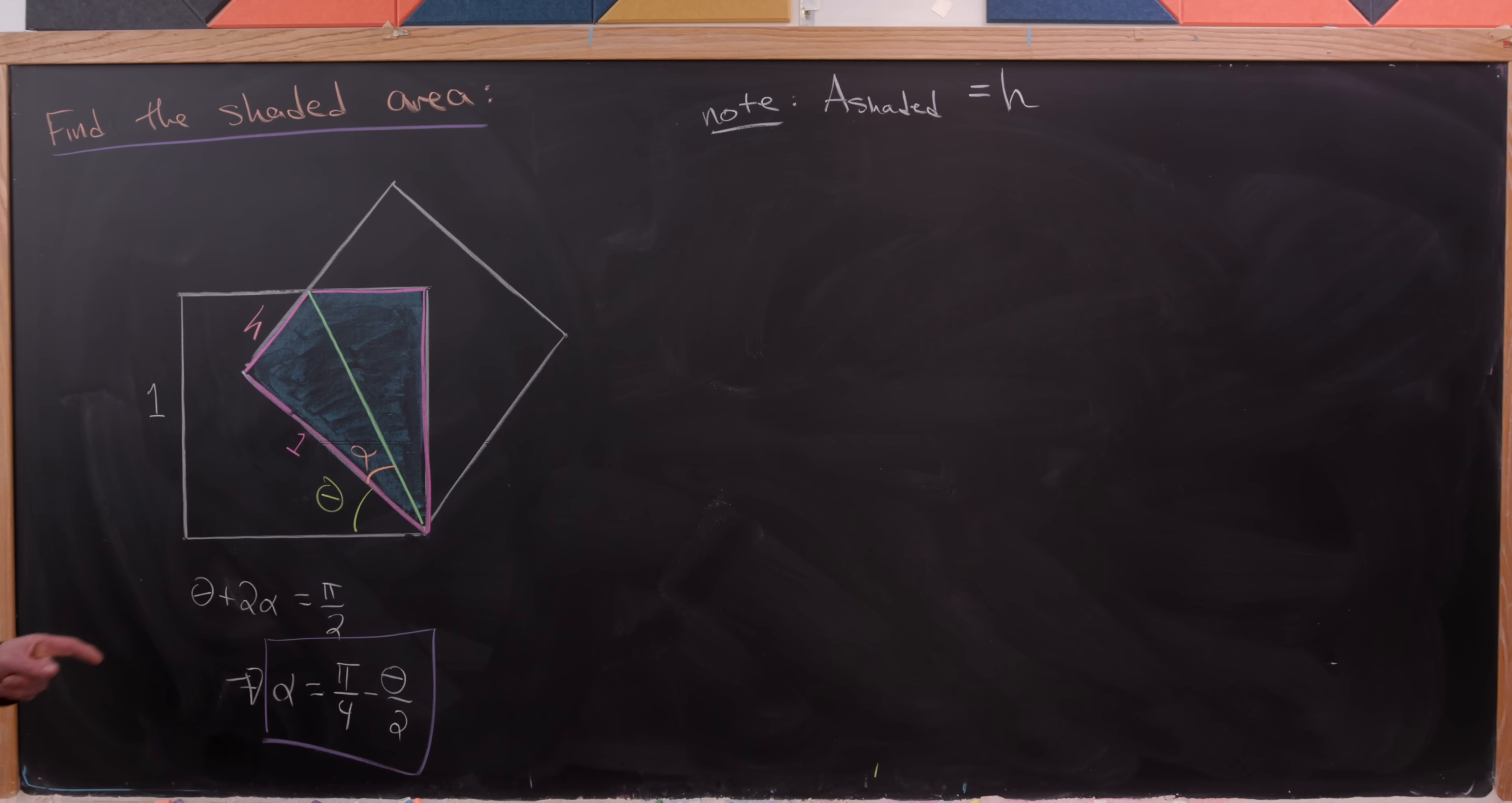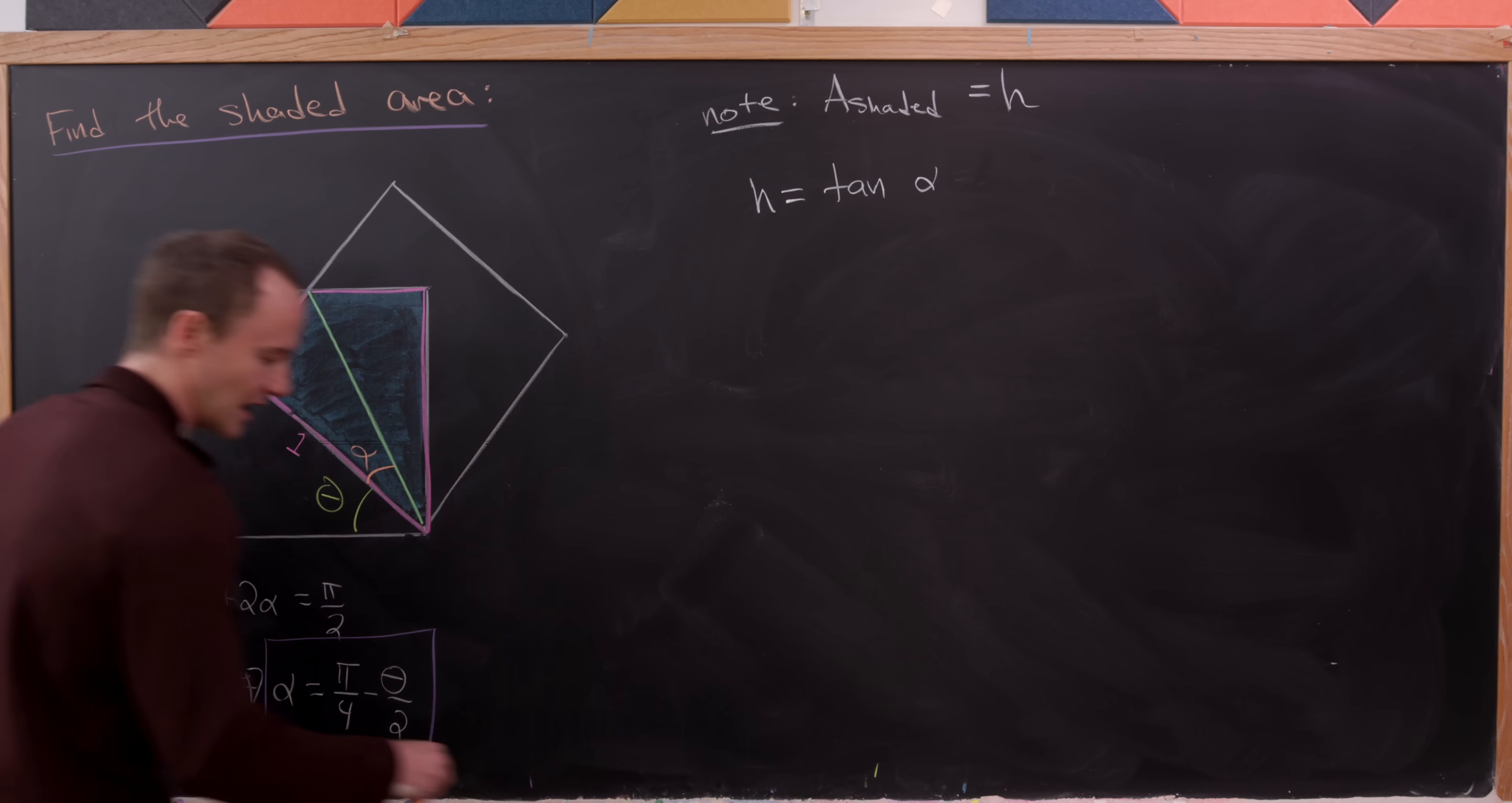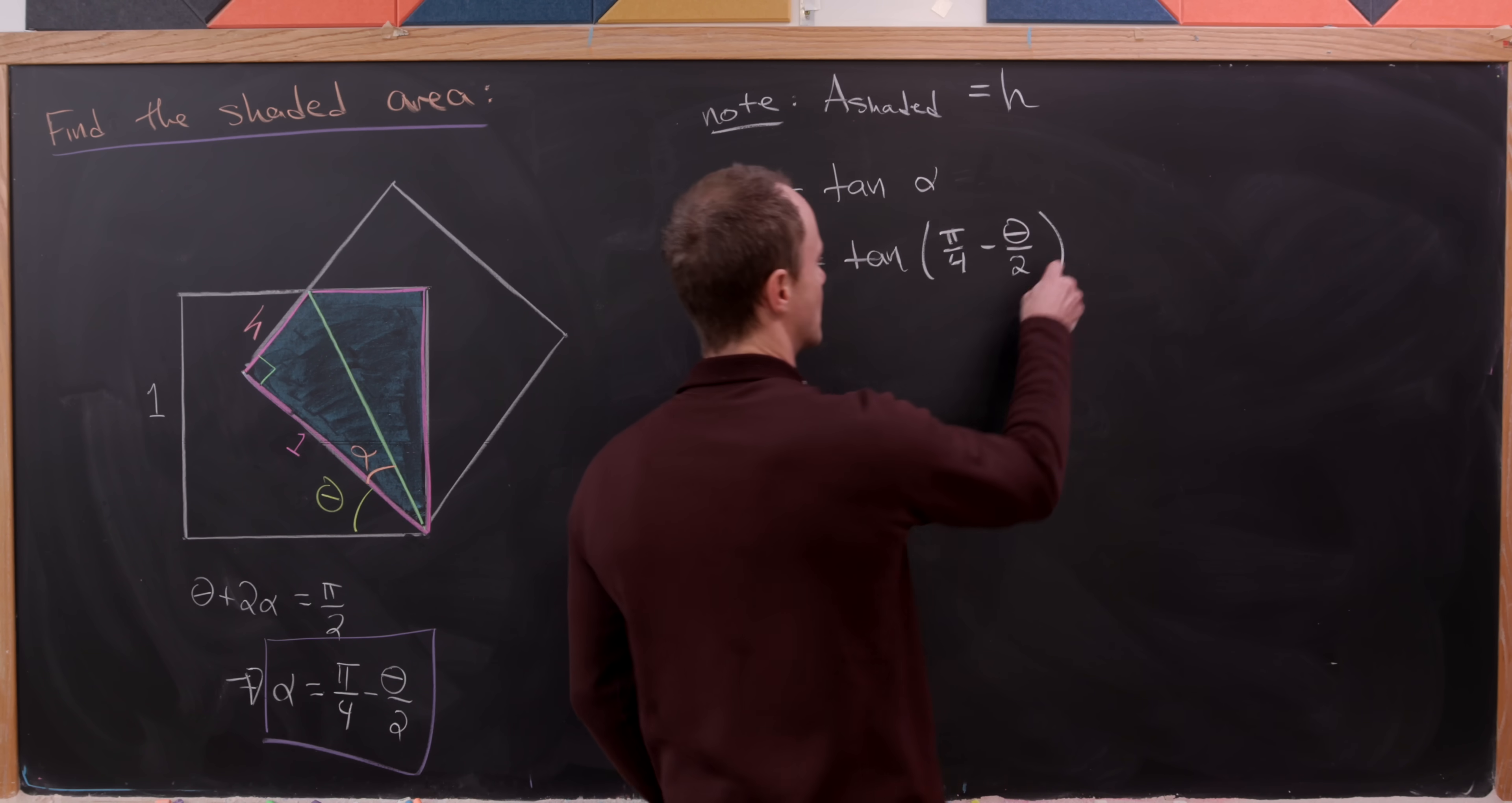But let's observe that we can calculate that pretty easily. Notice that we know that the tangent of alpha will be h over one. Tangent is opposite over adjacent. So here we have tangent of alpha is equal to h. Or maybe I'll just put the h over here. So h is equal to the tangent of alpha. Keeping in mind that we're using the fact here that this is a right angle which I think is pretty obvious because that comes from our rotated square. But notice that we've calculated alpha to be this quantity right here. So we've got that this is the tangent of π over 4 minus theta over 2.